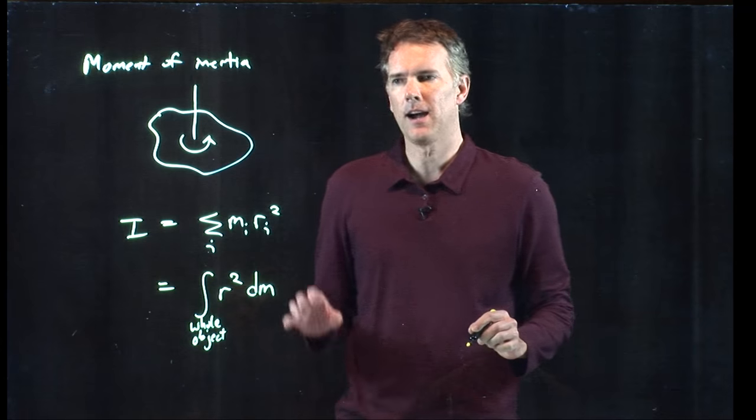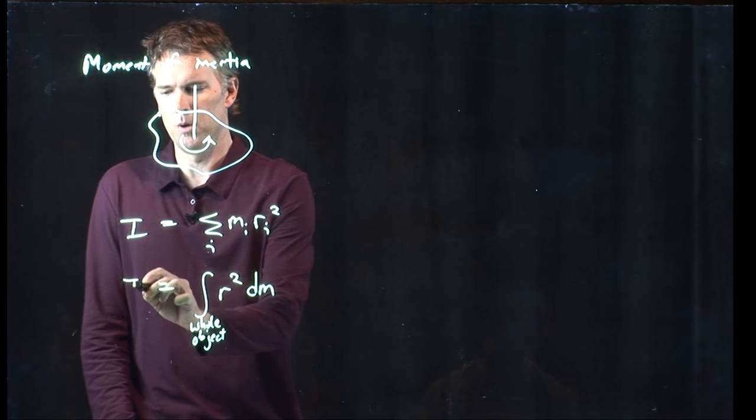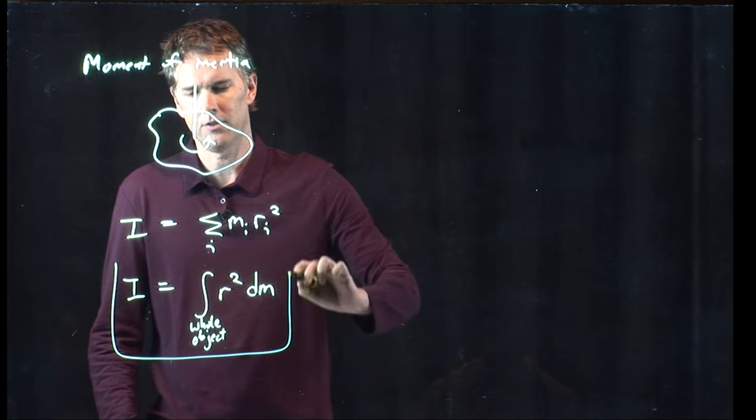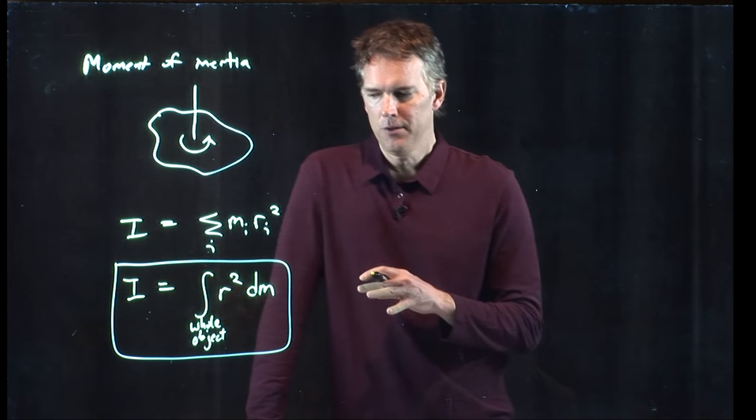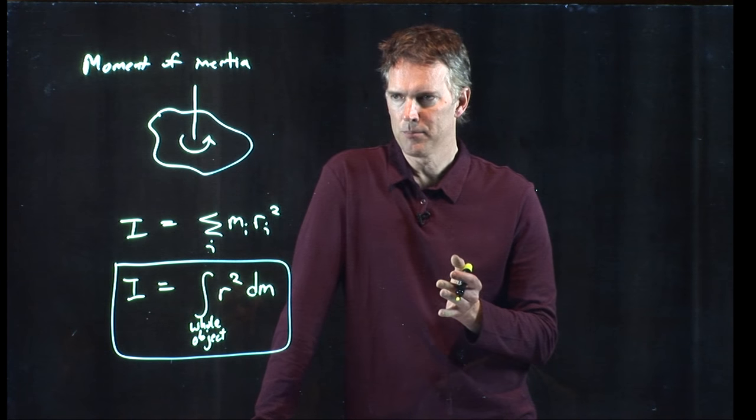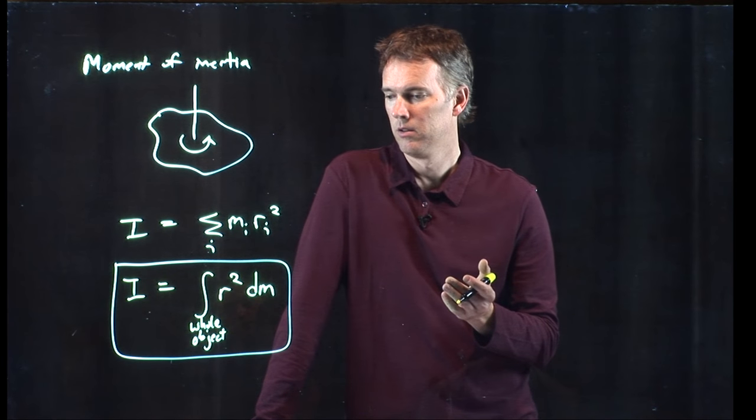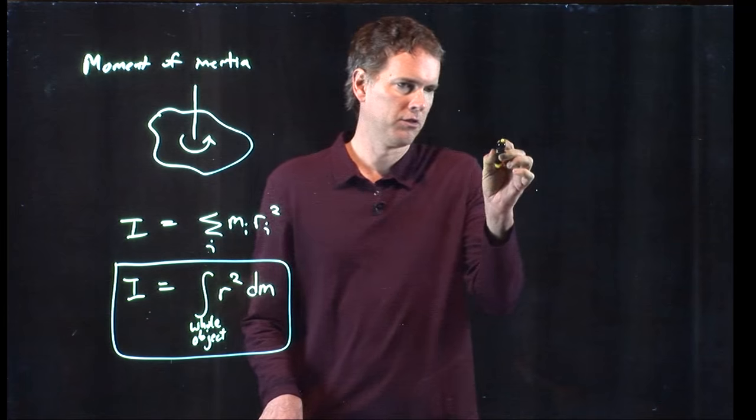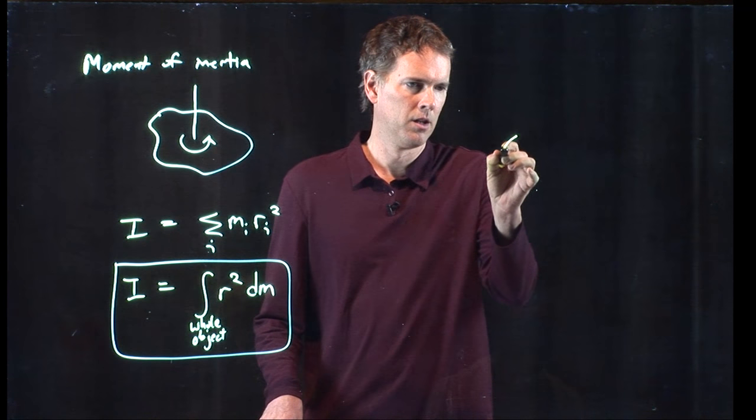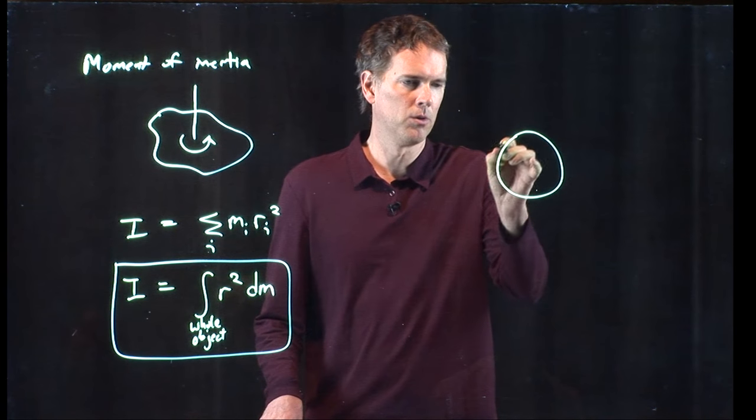So in general, this is how you calculate the moment of inertia. You have to do an integral. And if you do that integral for different objects, you can figure out what the moment of inertia is. And there's some fairly straightforward examples. For instance, let's do the wheel.